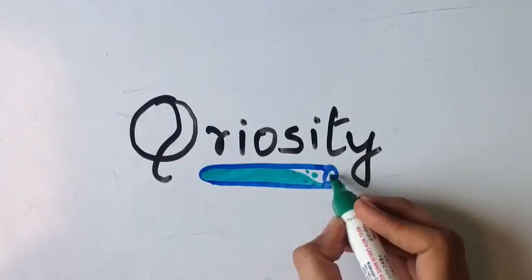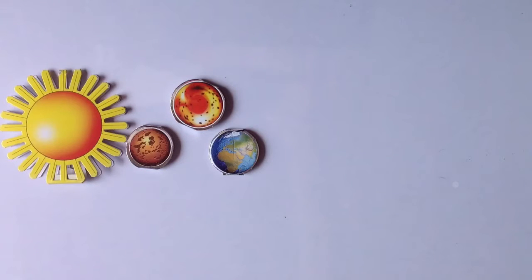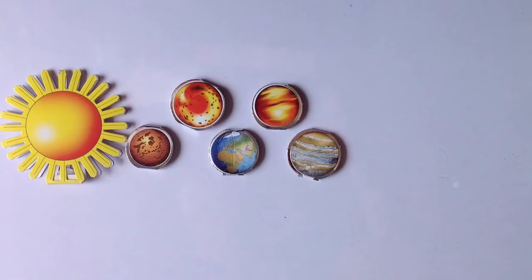We all know that there are 8 planets in our solar system. They are Mercury, Venus, Earth, Mars, Jupiter, Saturn, Uranus and Neptune.